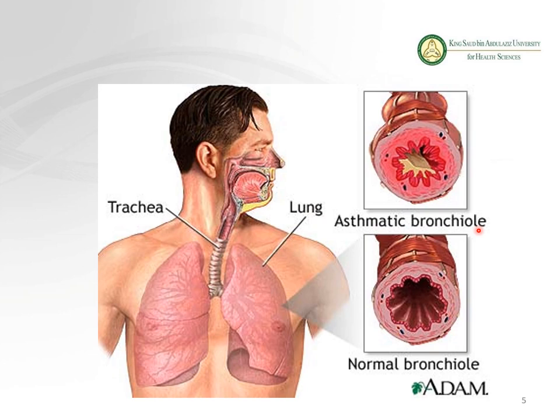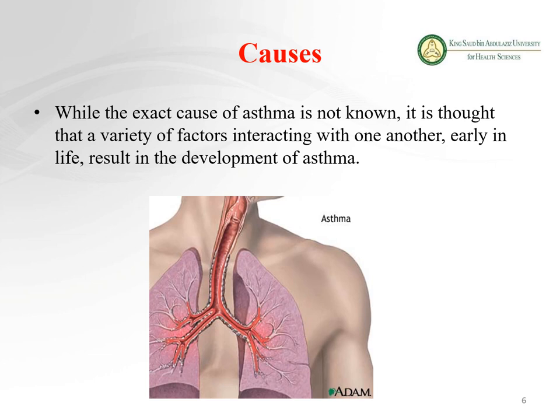You can see here the normal bronchiole versus the asthmatic bronchiole, which is inflamed and narrowed down with mucus, making it difficult to breathe properly.